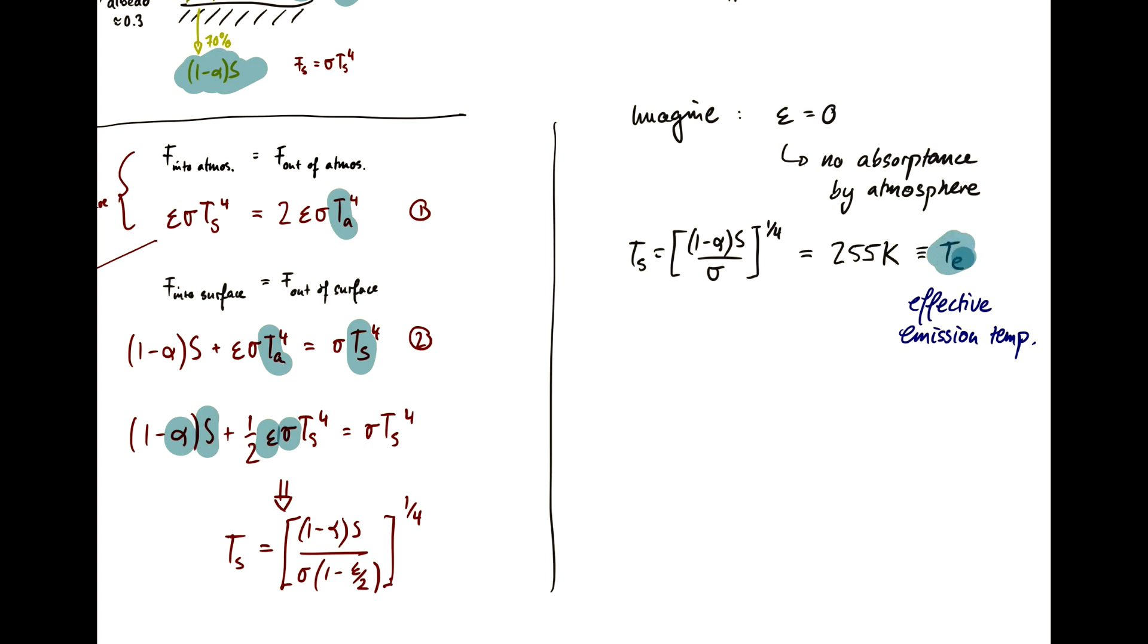With this definition of T_e, we can write our surface temperature as T_e times a multiplying factor that accounts for the atmosphere. So T_s equals T_e times [1/(1-epsilon/2)] to a quarter. Make sure you see where this comes from by comparing these two equations.